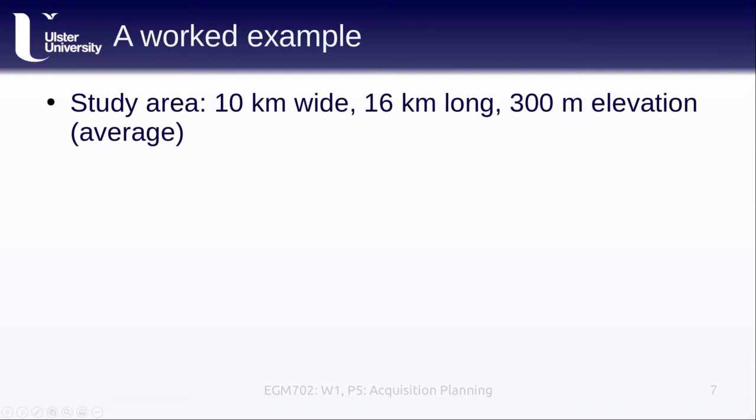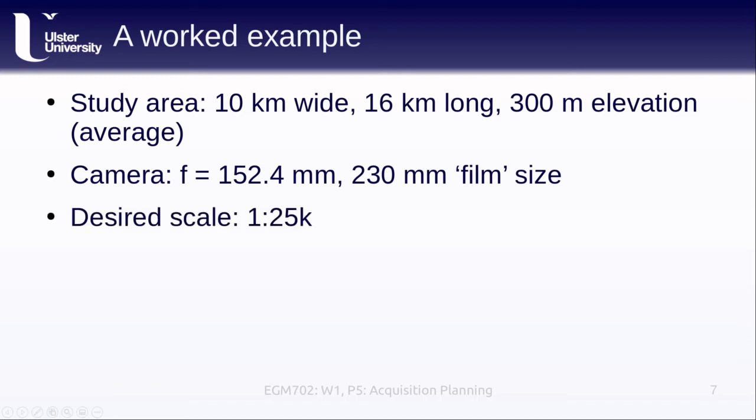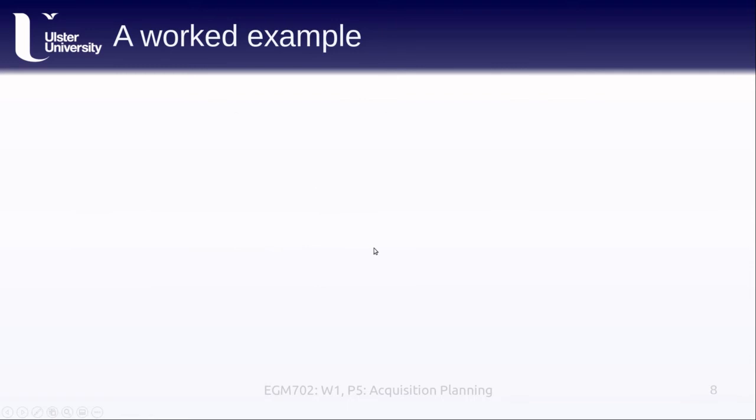What we're doing here is this worked example. We have a study area that is 10 kilometers wide and 16 kilometers long, and it has an average elevation of 300 meters. Our camera has a focal length of 152.4 millimeters and has a 230 millimeter film size. It doesn't really matter here if we're talking about a digital camera or a film camera. All of the calculations are going to be the same. The desired scale that we have is 1 to 25,000. So this would mean that one centimeter in our image corresponds to 25,000 centimeters on the ground.